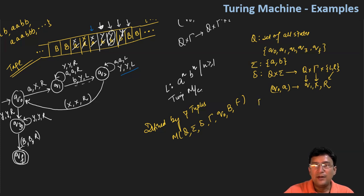And then the tape alphabet — this is the next thing. Tape alphabet means the tape has A and B, we are also looking at the blanks, and in the tape we are converting characters to X and Y. So this is the tape alphabet set.